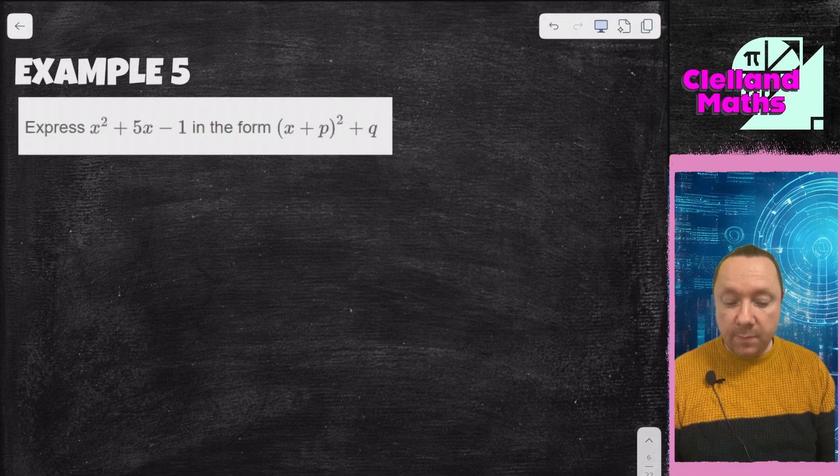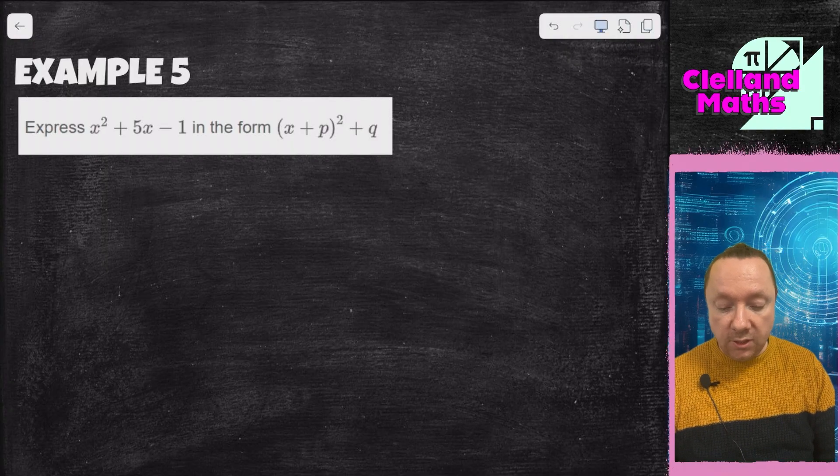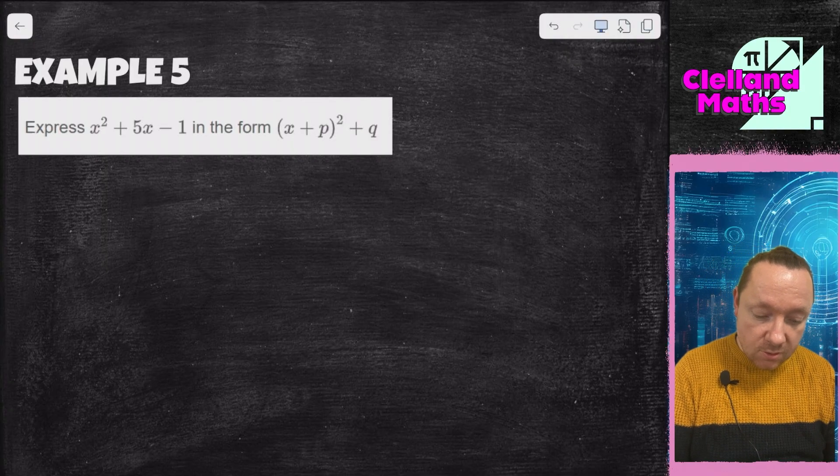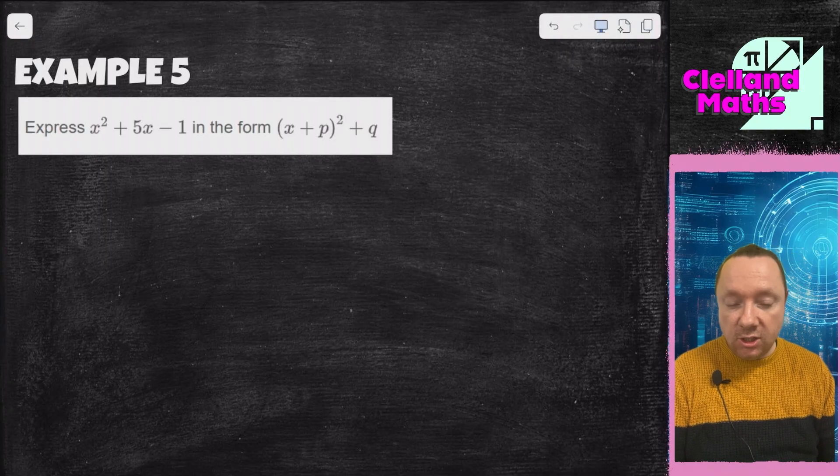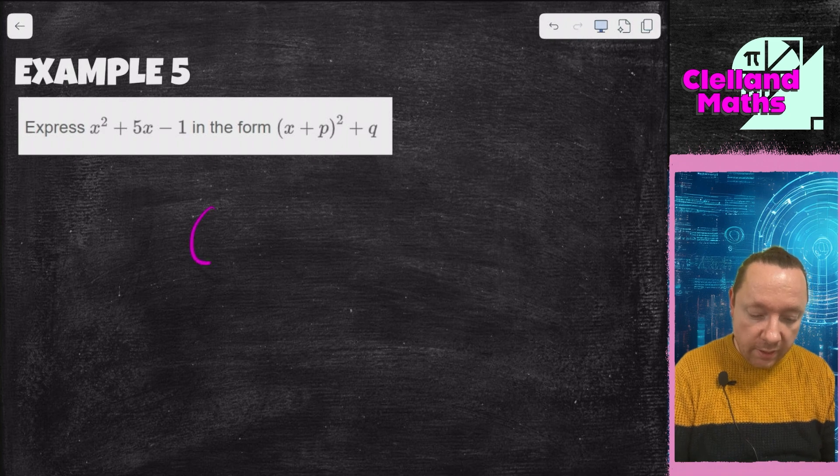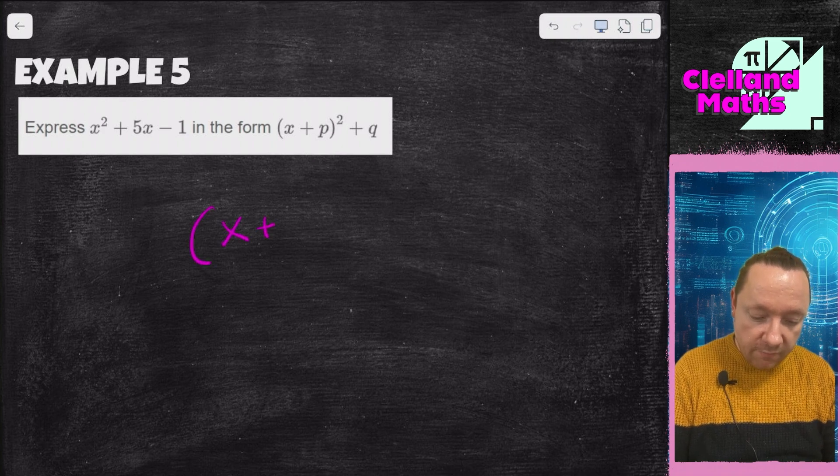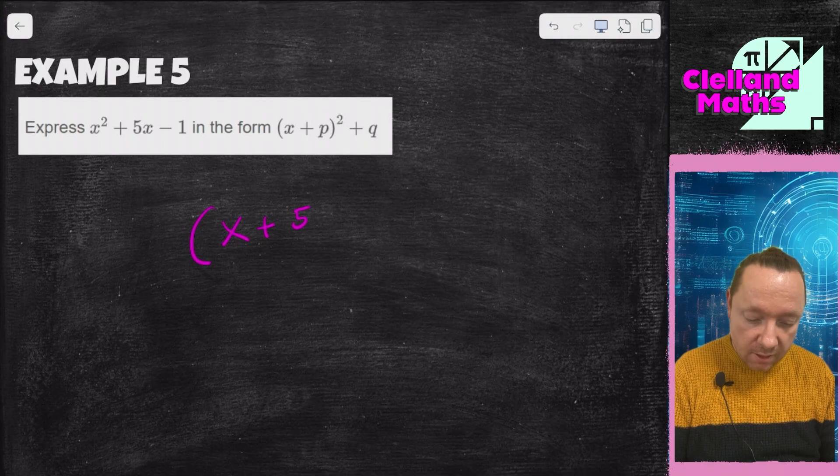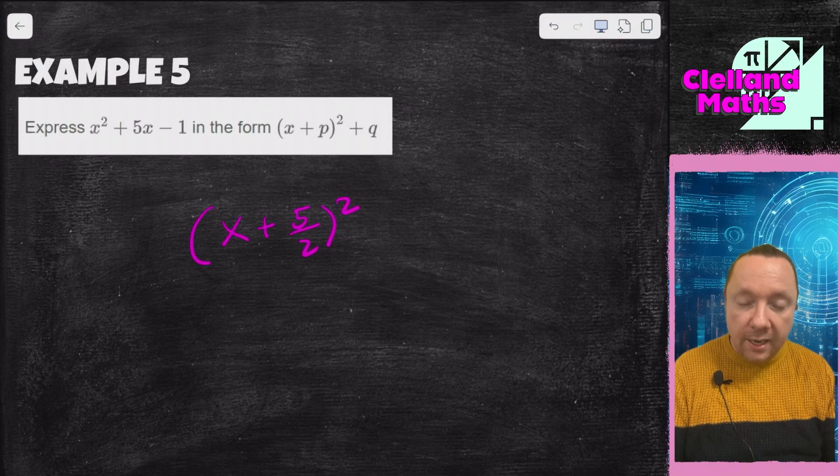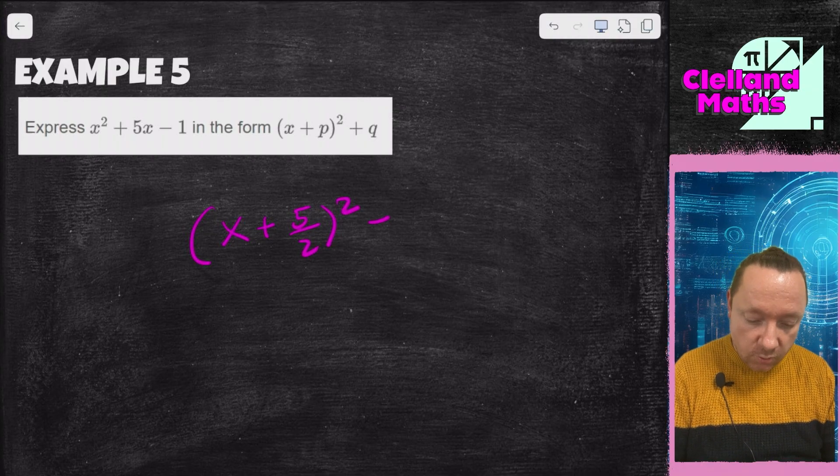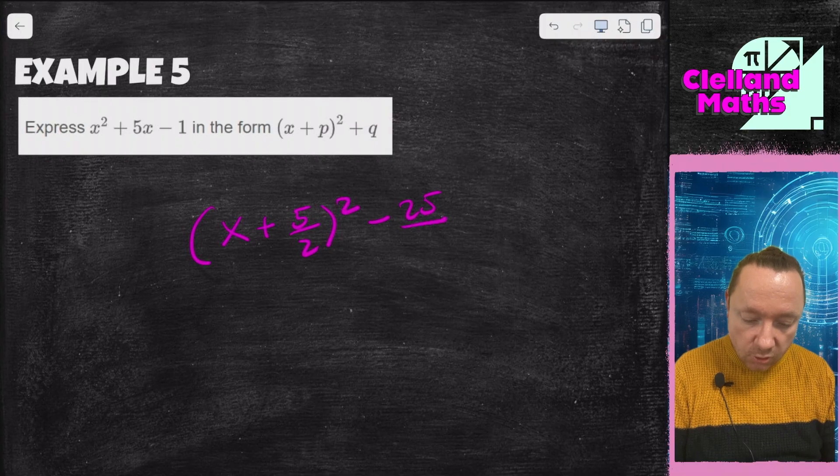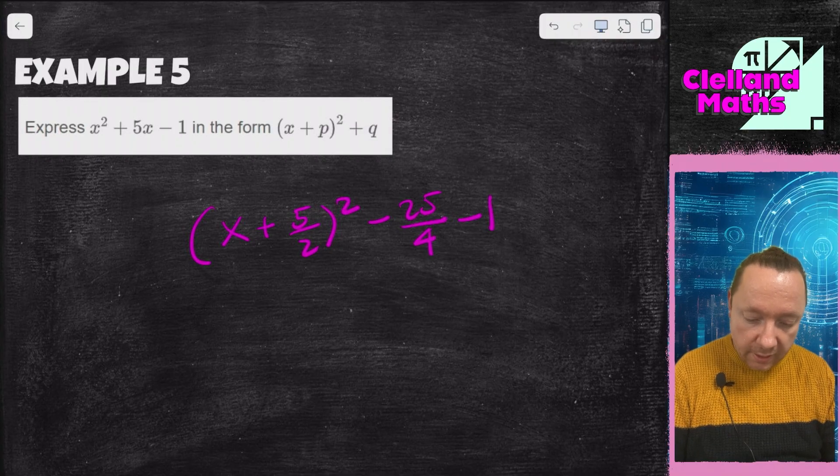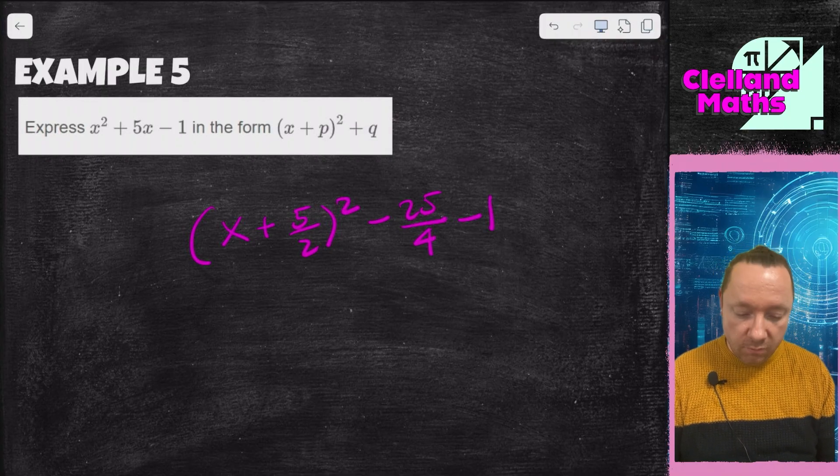x squared plus 5x minus 1 in the form x plus p squared plus q. Oh, that's a little bit tricky. We've got some fractions coming in here. It won't happen too often, don't worry. You've got x plus 5 divided by 2. Well, you can do it as a fraction or a decimal, I'll do it as a fraction. 5 over 2 squared. I take away that squared. Well, 5 squared is 25 and 2 times 2 is 4. I've got minus 1 left. So I've got this nasty thing to deal with, but that's okay.